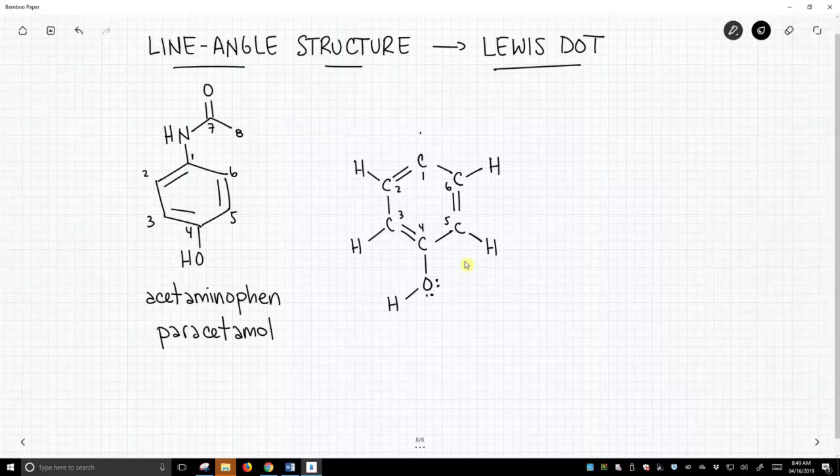Carbon one is attached to a nitrogen, and that completes carbon one. That gives it its four bonds. Nitrogen has a bond to a hydrogen, so show that as a proper bond. The nitrogen is also attached to carbon seven, which is in turn attached to carbon eight. Let's number those seven and eight, and let's give them Cs.